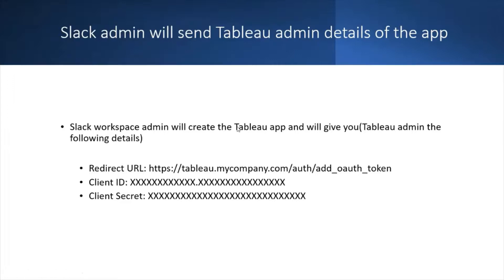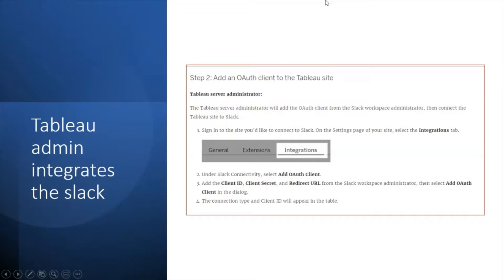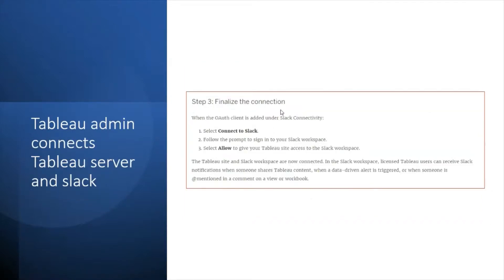We take those three details, log into the Tableau server, click on Settings, go to the Integrations tab, and click 'Add Client' to enter the client ID, client secret, and redirect URL. Then, just below that, we click 'Connect to Slack,' which prompts us to sign in to the workspace. We click 'Allow' for the Tableau site to access the Slack workspace, and the integration is all set up. Only Tableau licensed users can receive notifications from Slack.